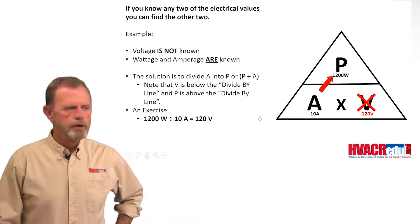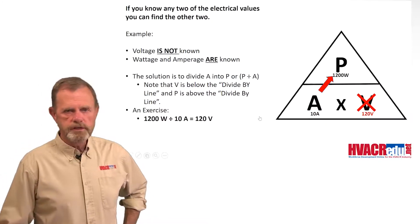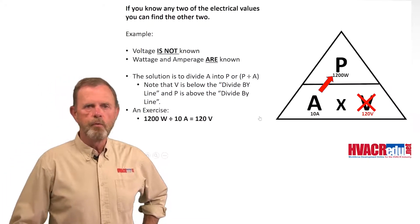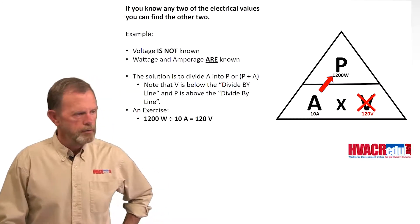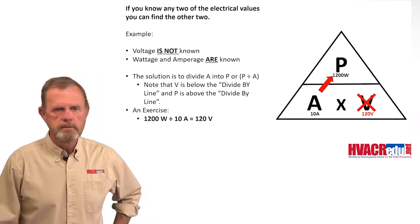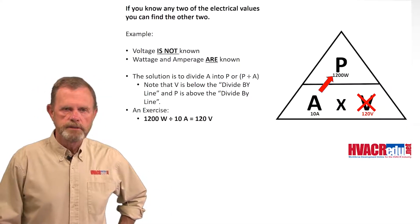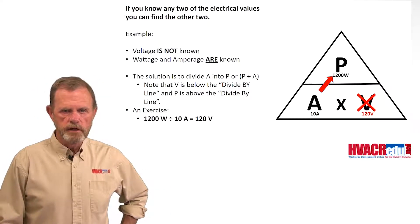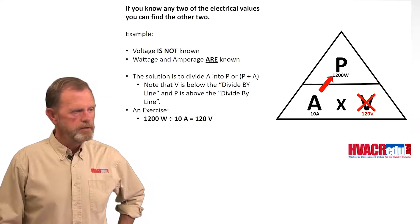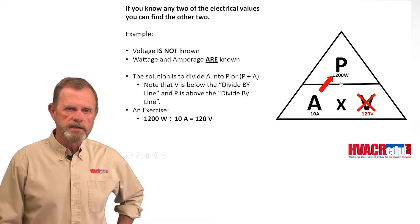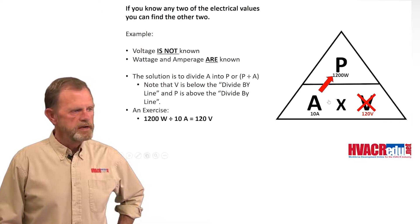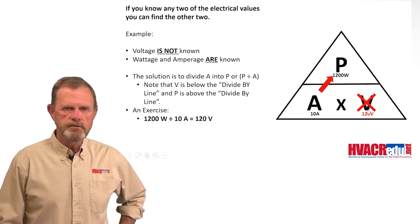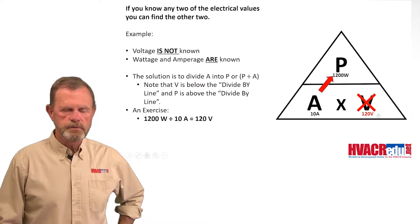We don't know voltage but we know wattage and amperage — just another version of the same thing. We've got 1200 watts and 10 amps. 10 divided into 1200 is 120, so it's 120 volts.